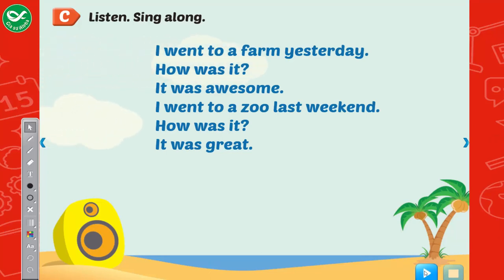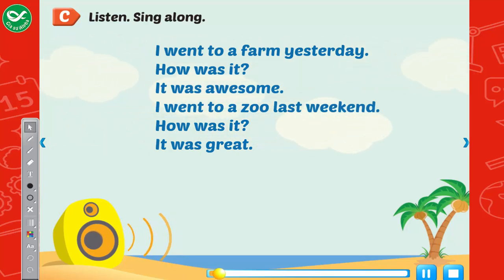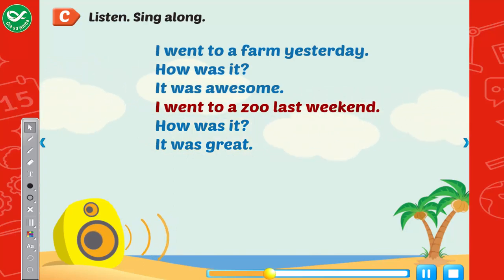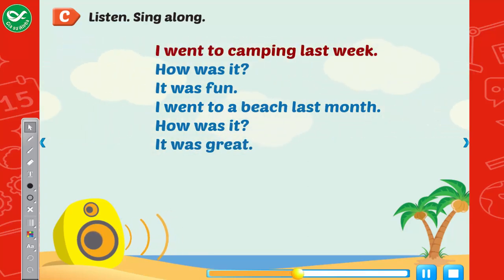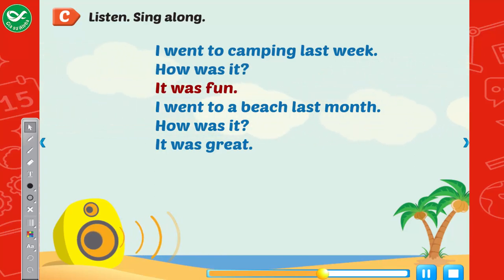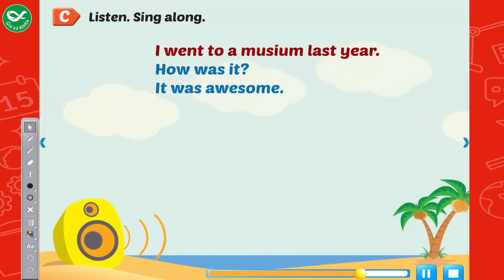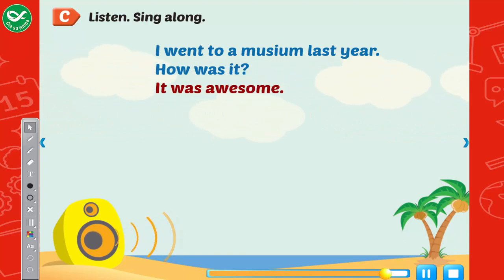Listen, sing along. I went to a farm yesterday. How was it? It was awesome! I went to a zoo last weekend. How was it? It was great! I went camping last week. How was it? It was fun. I went to a beach last month. How was it? It was great. I went to a museum last year. How was it? It was awesome.